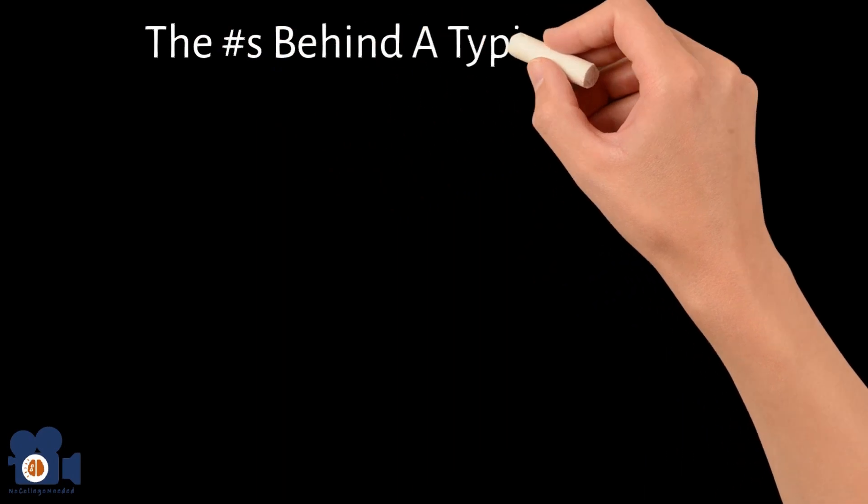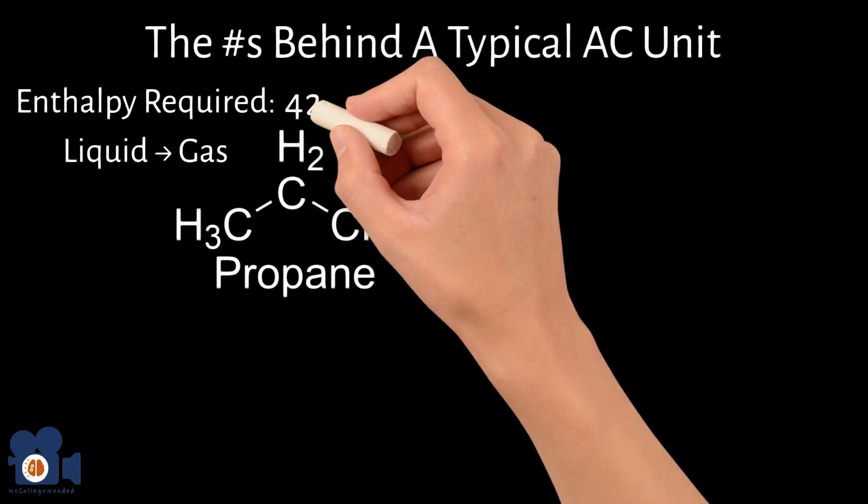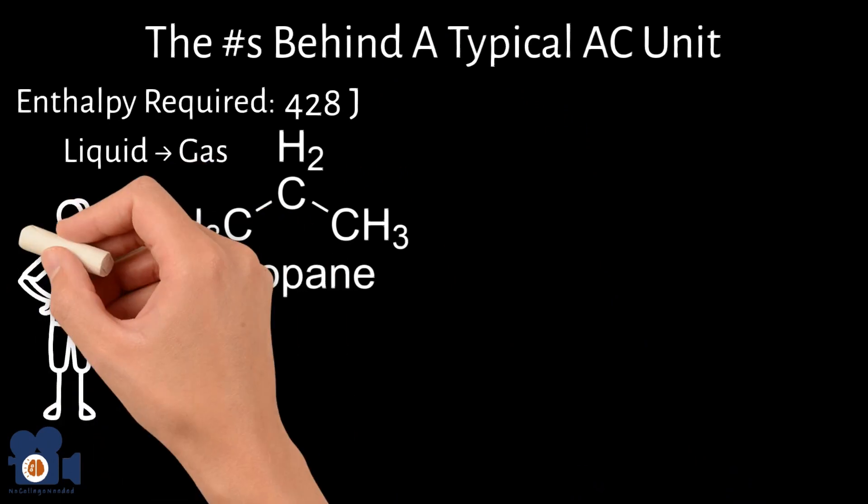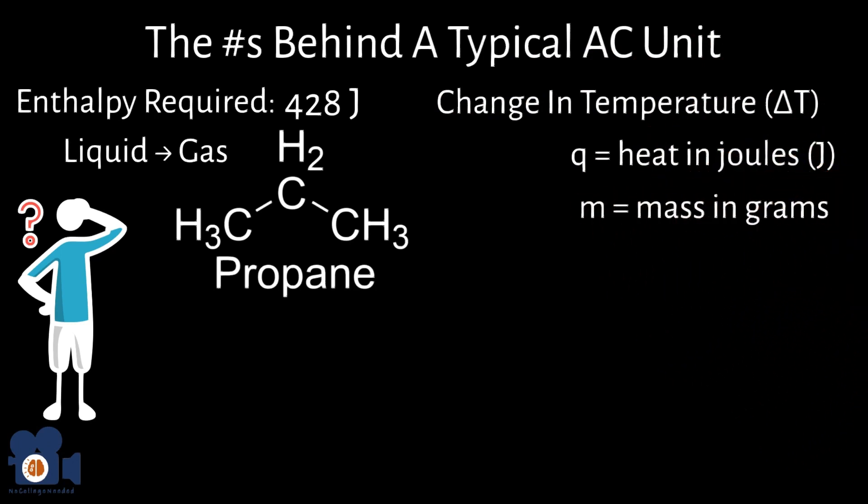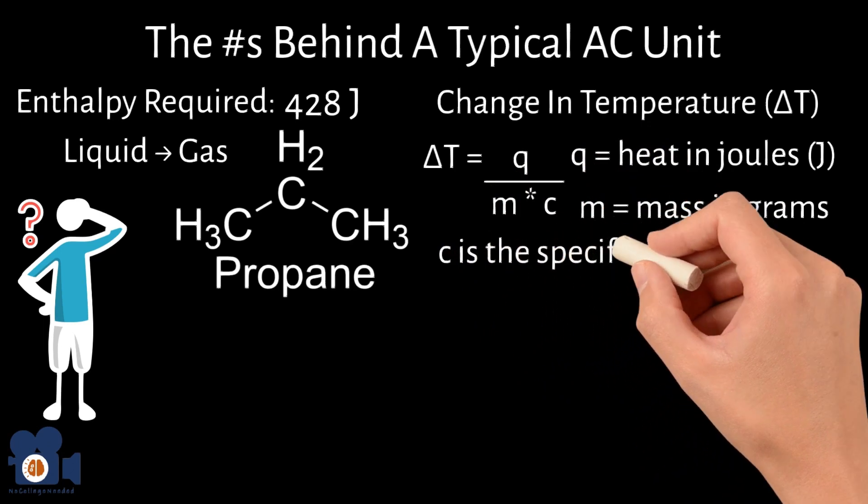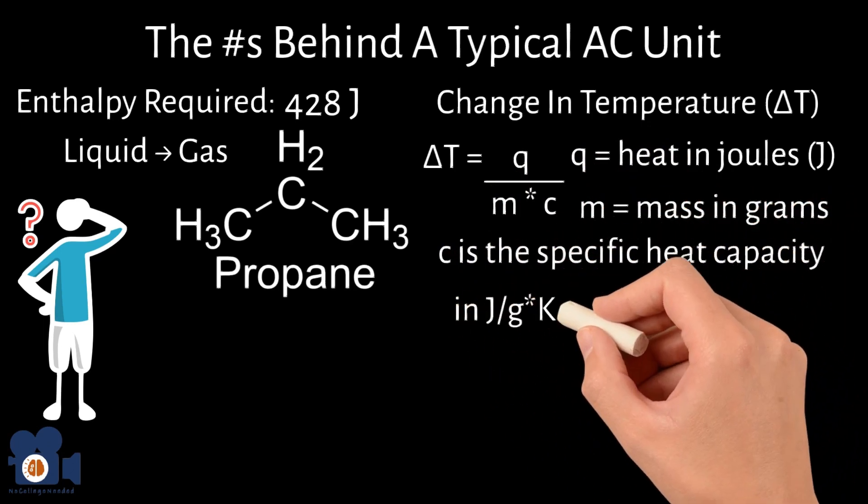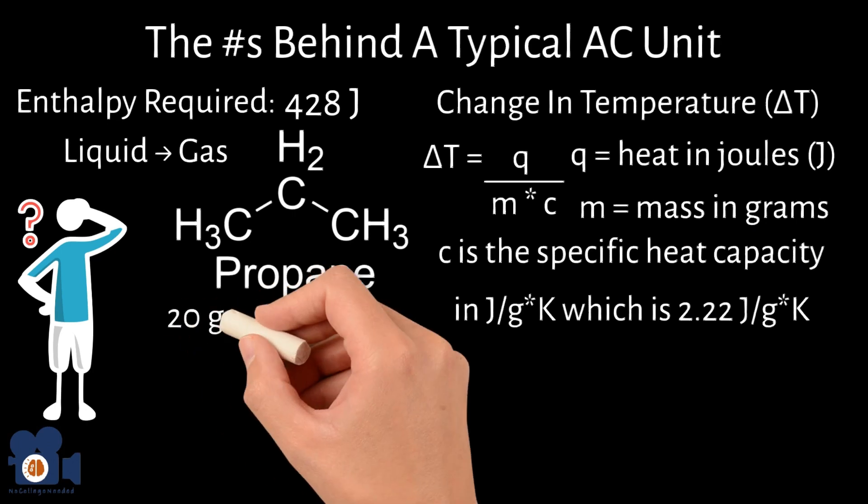So let's look at the numbers behind a typical AC unit. The enthalpy required to change propane, a highly efficient refrigerant, from liquid to gas at its boiling point of negative 42.1 degrees Celsius or negative 43.8 degrees Fahrenheit, is about 428 joules. But that doesn't really tell you much about temperature changes, so we need an equation for that. The formula to calculate the change in temperature, delta T, when a certain amount of heat, Q, in joules is added or removed from a mass, m, in grams of a substance is delta T equals Q divided by m times C, where C is the specific heat capacity in joules per gram, which is 2.22 joules per gram Kelvin for liquid propane.